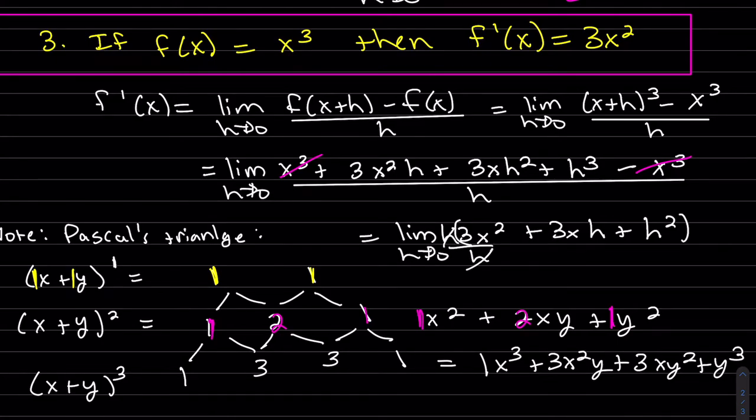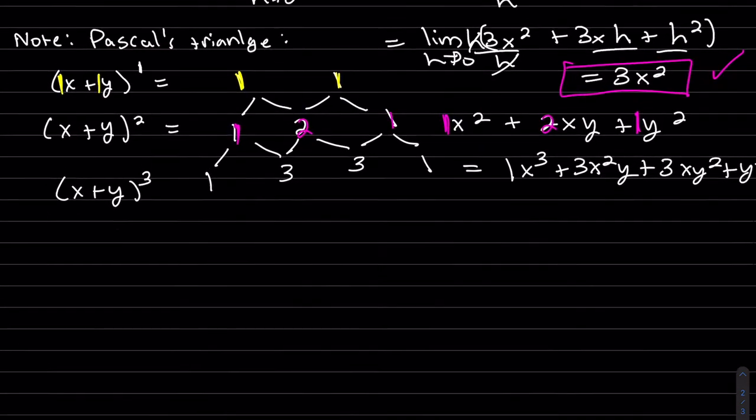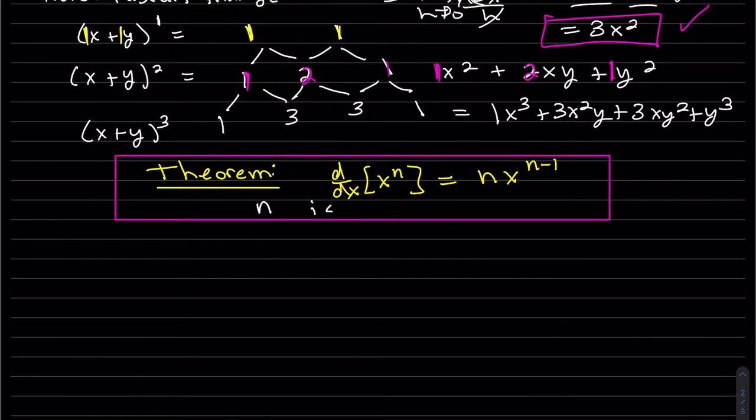So those are canceling. Now we send h to 0, this goes to 0, this goes to 0, and we get 3x squared. So I think we can see a pattern.